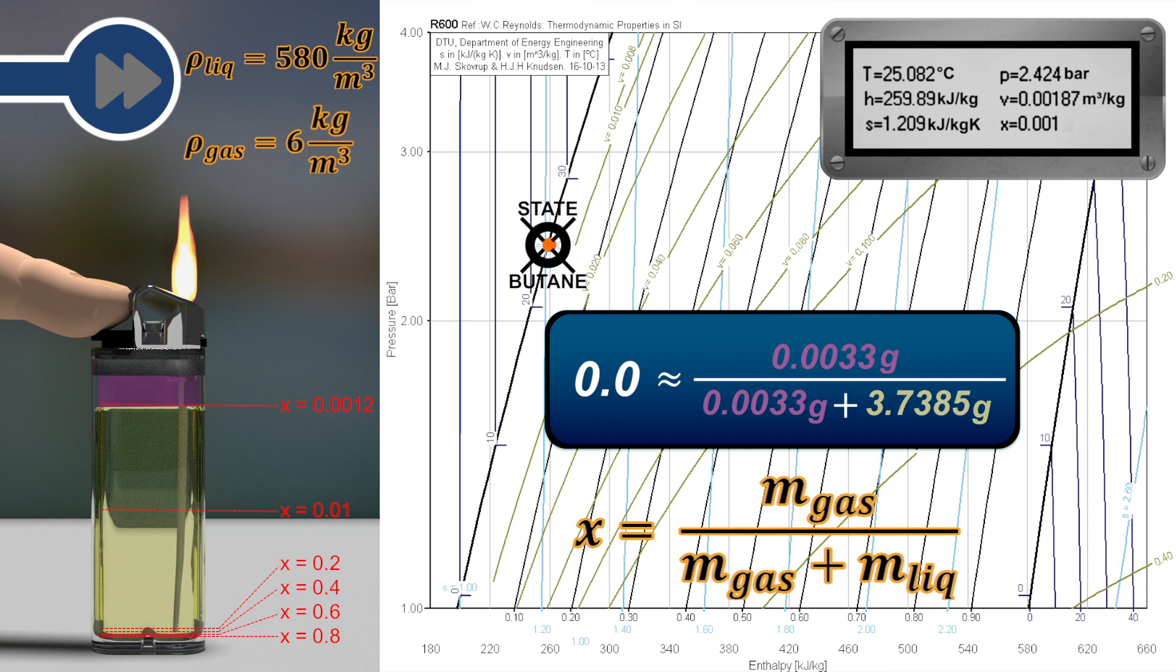While operating the lighter, gaseous butane exits the system through the open valve and burns in the flame. In the tank of a lighter, the equilibrium between liquid and gaseous phase is constantly maintained. Less and less of a volume is filled with a liquid phase and more and more with a gaseous phase. When almost all of a tank is filled with gaseous butane, the state of a system moves towards the line of saturated gas.